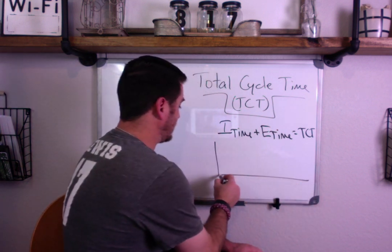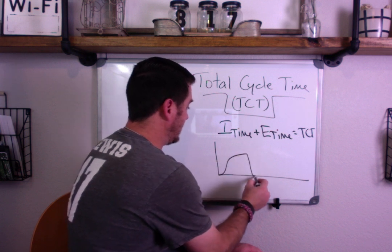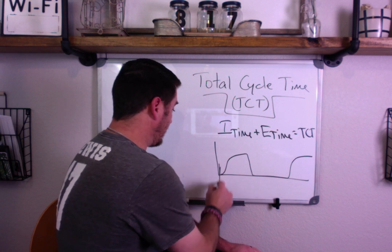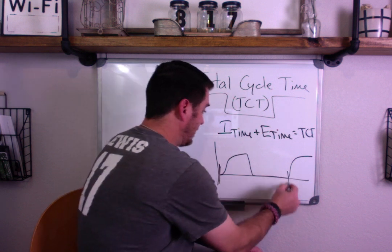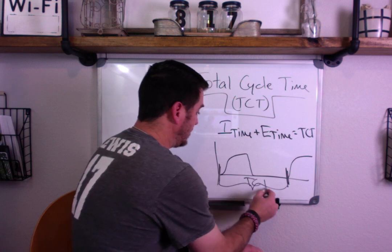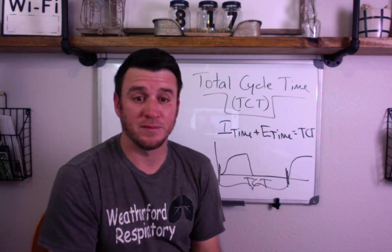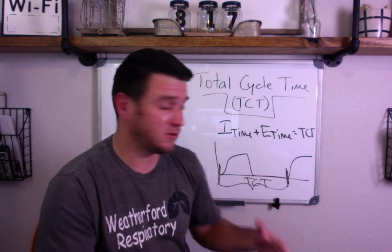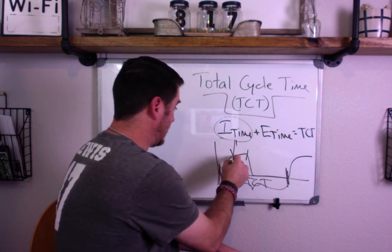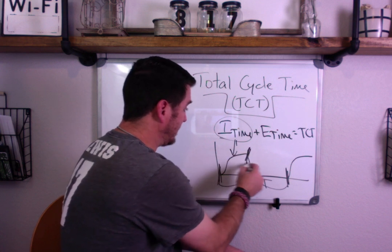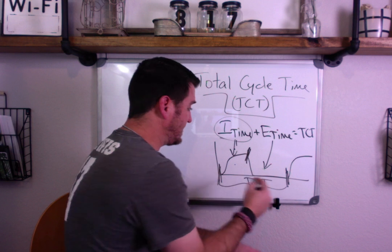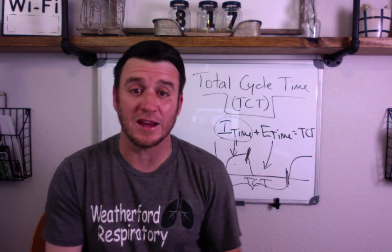So we've got a vent here — we're in volume control. A breath comes up, then exhalation, then the next breath comes up. From here to here equals total cycle time. All of inspiratory time, from here to here, is I time. And E time is from here to here. These two areas together create our total cycle time.